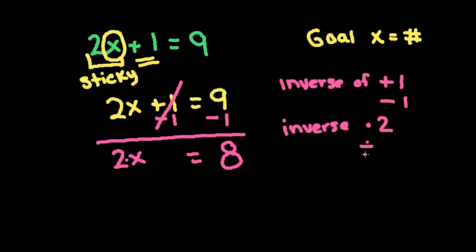So the inverse of times 2 is divided by 2. So we're going to divide by 2 on both sides. That crosses off. So x is equal to 8 divided by 2 is 4. And that is our final answer.